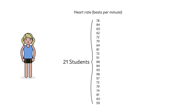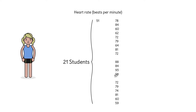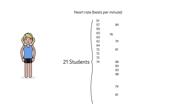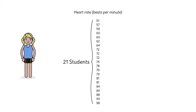We want to see patterns in this data, so we can reorganize this list from smallest to largest. We can now find the median. Remember, if there are 21 heart rates arranged in order, the median is the one in the middle. That means we count to the eleventh one: 74.